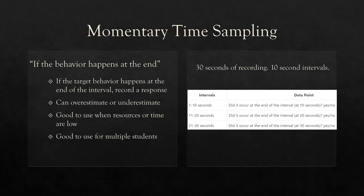For the example with 30 seconds of recording in 10-second intervals: 1 to 10 seconds — did it occur at the end of the interval, at 10 seconds? Yes or no. The other 9 seconds, you're not worried about. 11 to 20 — did it occur at the end, at 20 seconds? 21 to 30 — did it occur at the end, at 30 seconds? Momentary time sampling is good when you can't continuously observe the learner and need to do other things between checks.